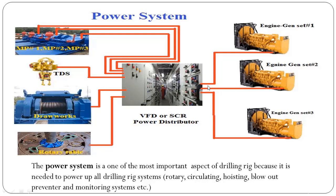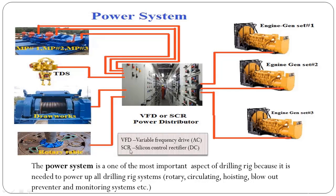Electricity from all engine generator sets is given to the power distribution system, which can be either VFD (Variable Frequency Drive) or SCR (Silicon Controlled Rectifier). SCR is used in the case of direct current, and VFD is used in the case of alternating current.